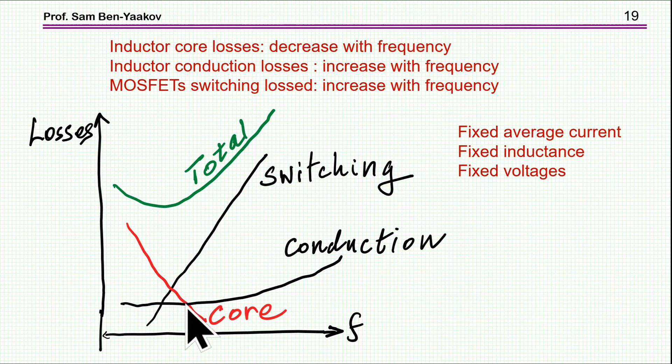Core losses, as I've said, are going actually down because the effect of the reduction in the B_peak is more important than the increase of the frequency loss.